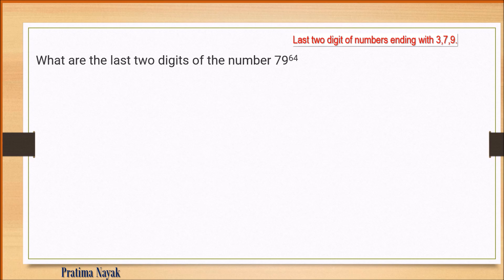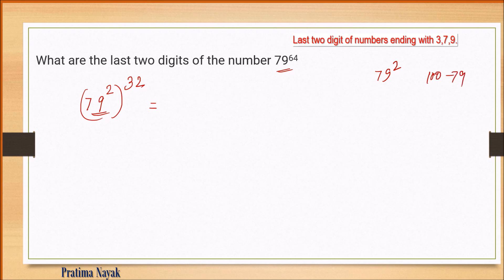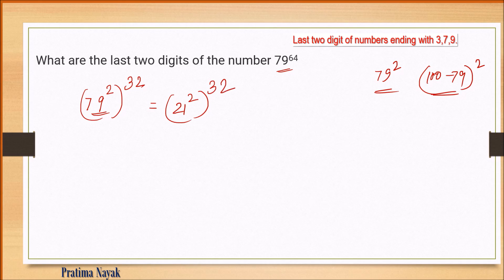Next: 79 to the power 64. Write as (79 squared) to the power 32. Apply (100 − 79) = 21, so 79 squared has the same last two digits as 21 squared to the power 32. Now 21 squared ends in 41. Then (41 squared) to the power 16... 41 squared ends in 81. So 81 to the power 16 — unit digit 1, 10th place 8 × 6 = 48, take 8. Wait: the answer ends in 81.